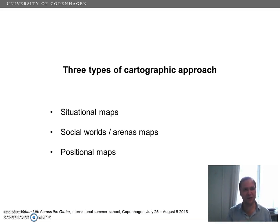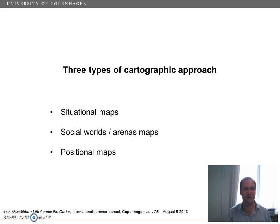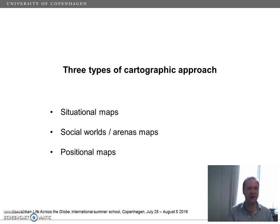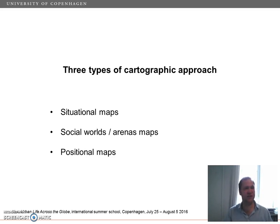And lastly, positional maps lay out the major positions taken and not taken in the data vis-à-vis particular discursive axes of variation, difference, concern, and controversy found in the situation of concern. Such maps seek to highlight the often contradictory positionalities that people and groups adopt, at the expense of more simplistic tropes such as the powerful versus the powerless, or the exploiter versus the exploited.